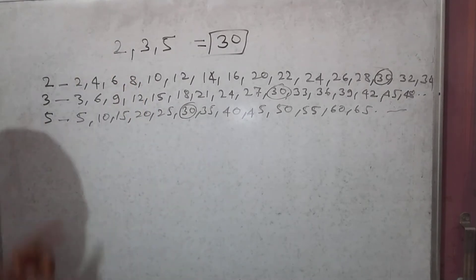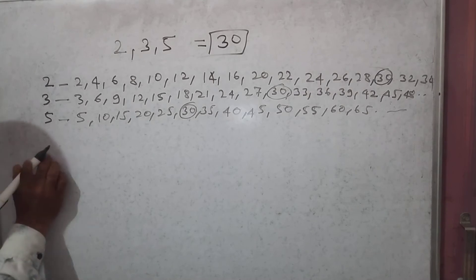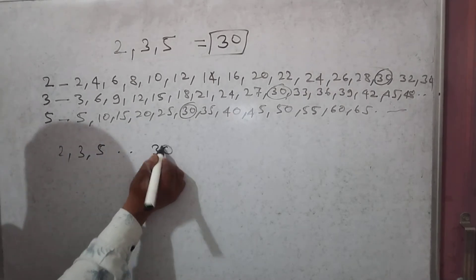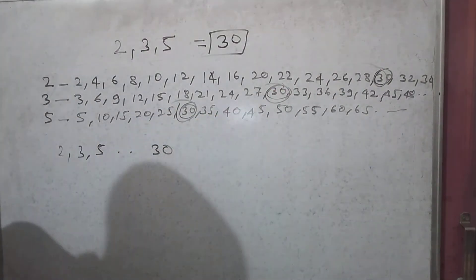So 2, 3, 5 - LCM is 30. This number, this number, and this number. For more better understanding, look at next number.